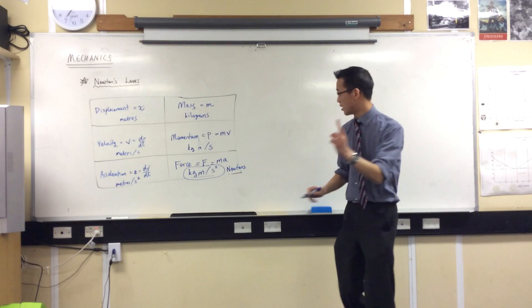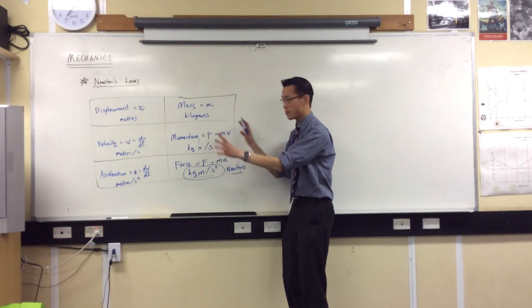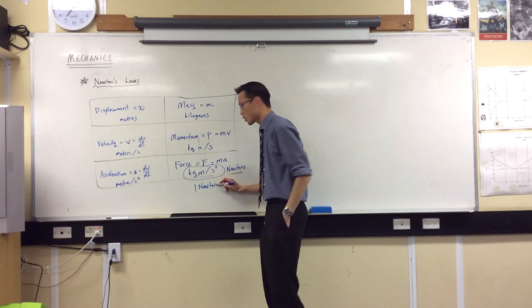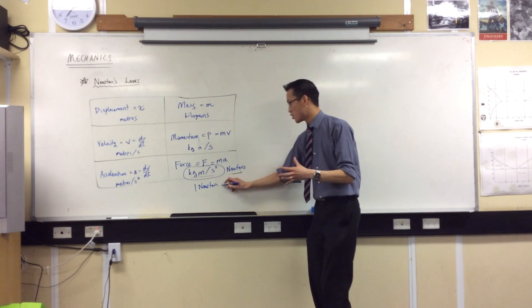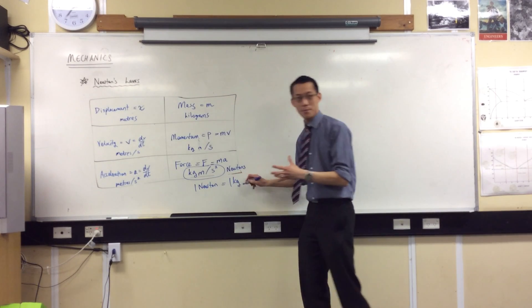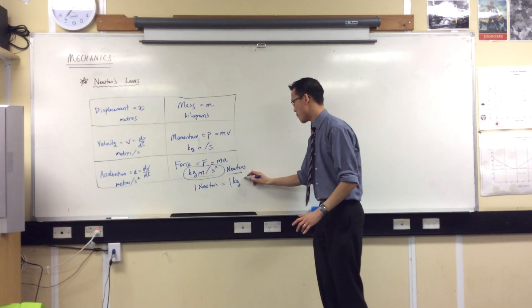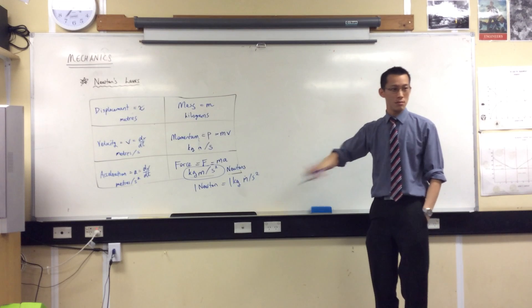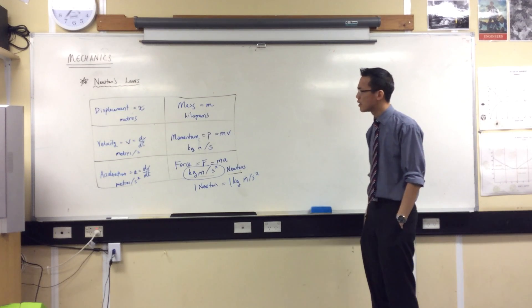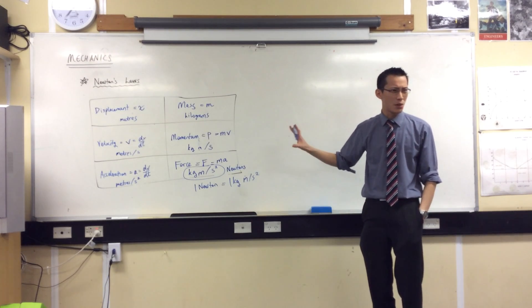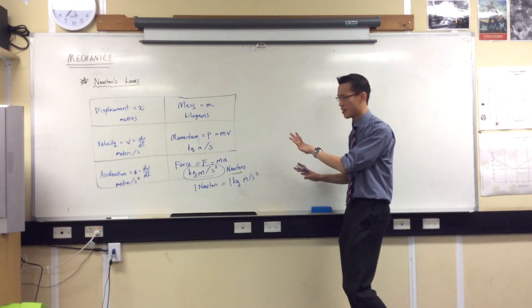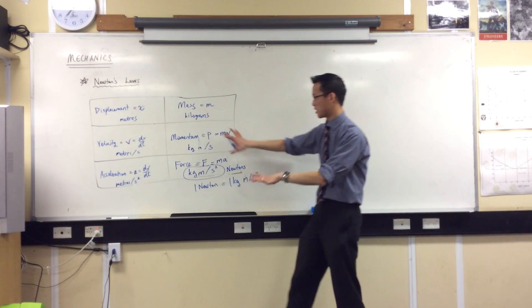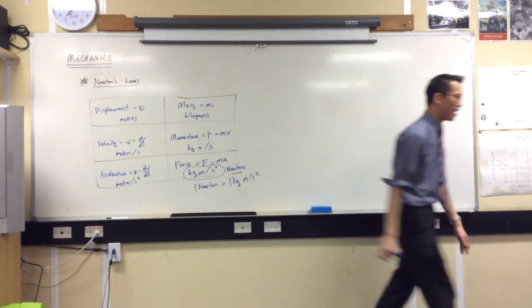So one newton, keeping with all of the units that we've used here, one newton is the force required to move a single kilogram and accelerate it at one meter per second squared. That's what a newton is. Does anyone have any questions about that so far? Do you see how it all fits together? I found, the first time I learned this, I found the table really helpful, because it shows you the relationship between each.